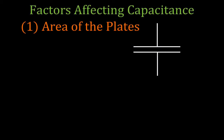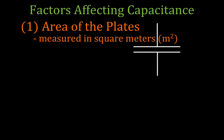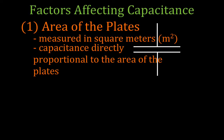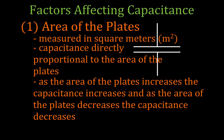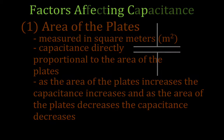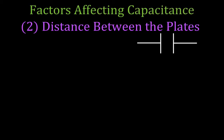What about the area of the plates? The area of the plates is measured in meters squared. The capacitance is directly proportional to the area of the plates. That means as the area of the plates increases, the capacitance increases. And as the area of the plates decreases, the capacitance also decreases. That should make sense — we're storing charge. The bigger the plates, the more charge you can store. The capacitance is directly proportional to the area of the plates.